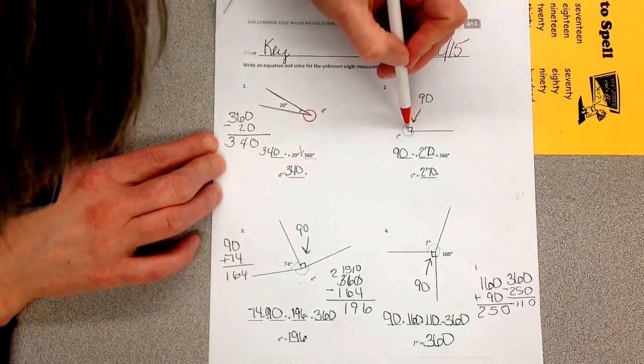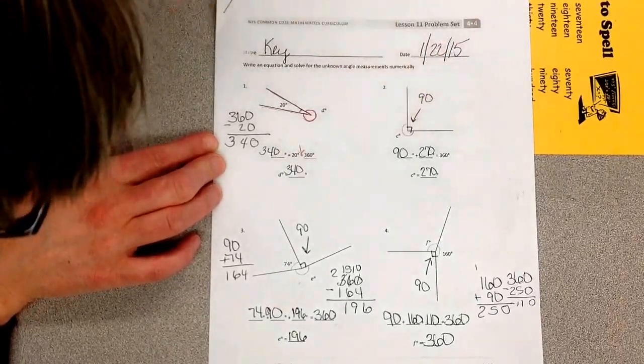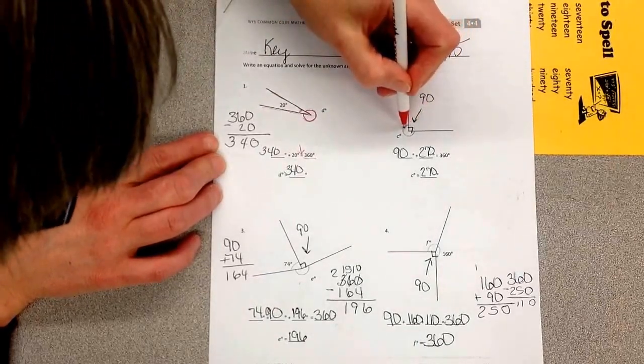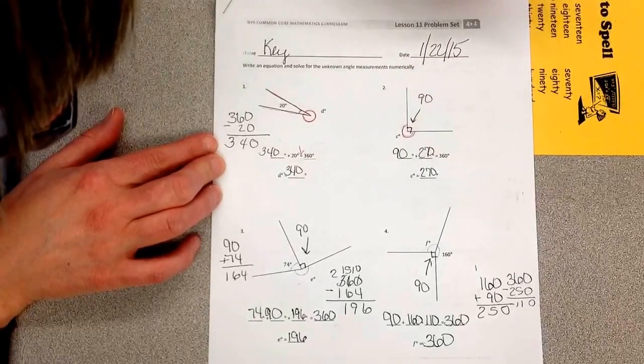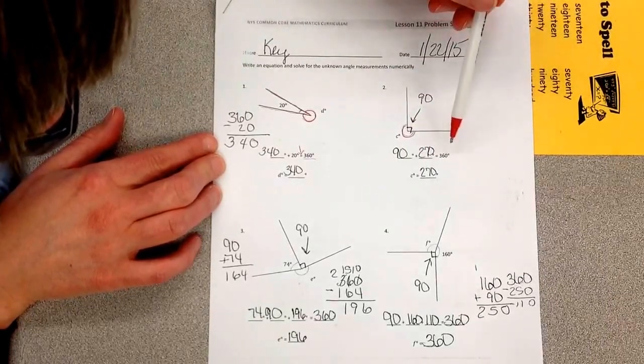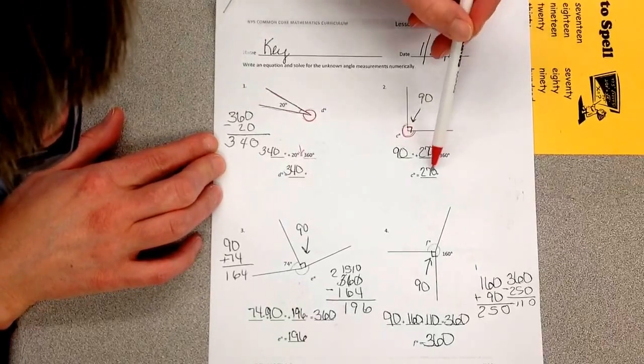Let's try the next one. You should recognize this is the right angle. The little box is there. You have to find this angle. So 90 plus something is 360. So if you take 360 minus 90, you will get 270.